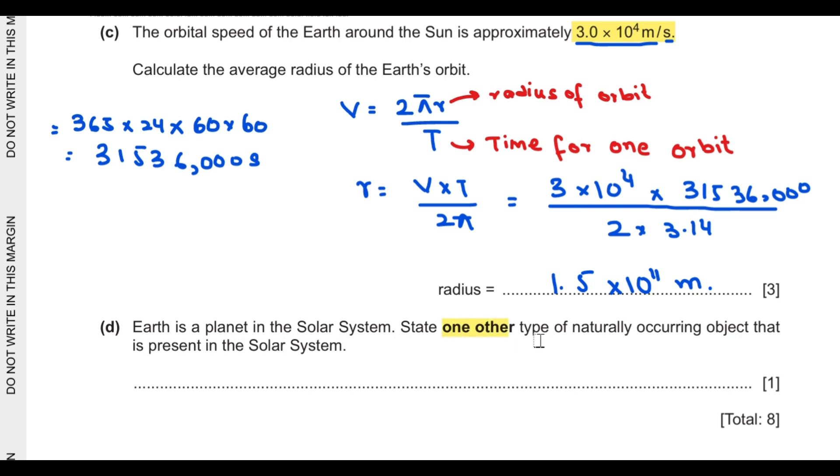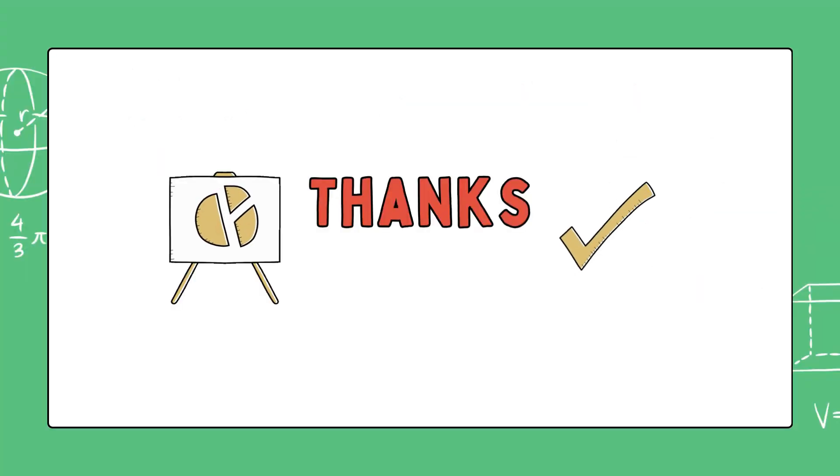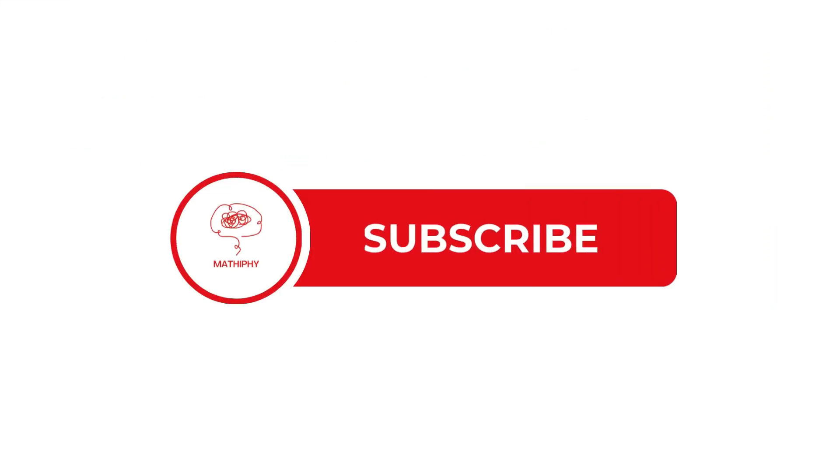Part D says Earth is a planet in the solar system. State one other type of naturally occurring object in the solar system. Stars and comets appear in the solar system naturally. Thanks for watching the video. If it was helpful, please hit the like button and subscribe to my channel.